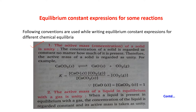Since the concentration is constant, active mass is regarded as unity. For example: CaCO3(s) ⇌ CaO(s) + CO2(g). CaO is solid, CaCO3 is also solid, but CO2 is gas. The equilibrium constant K equals the concentration of CaO(s) times concentration of CO2(g) divided by concentration of CaCO3(s). Since CaO and CaCO3 are solids, their concentrations are taken as unity. So, K = [CO2(g)] only.